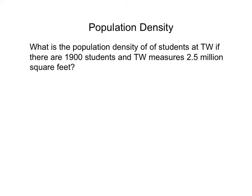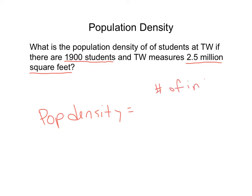Now I'm going to try one for you. What is the population density of students at Tulare Western if there are 1,900 students? I actually looked on Google Maps and tried to calculate how big Tulare Western is, and it came out to about 2.5 million square feet. This counts everything — the football field, the baseball fields, the track, everything. So what is the population density? Remember, it equals the population or number of individuals divided by the area.